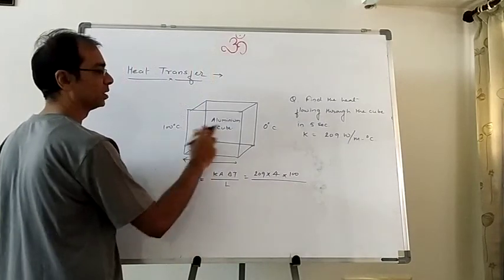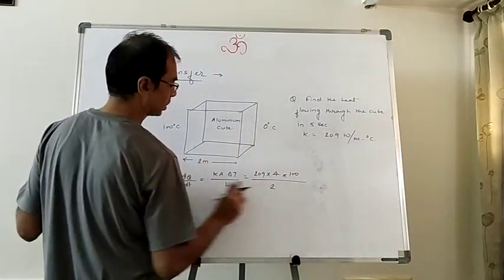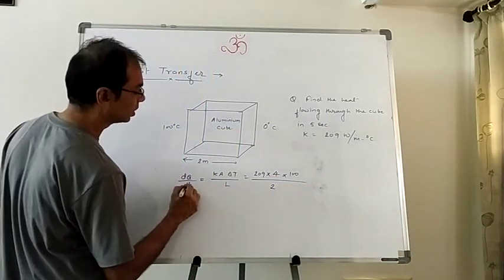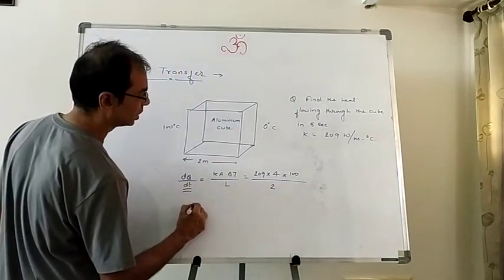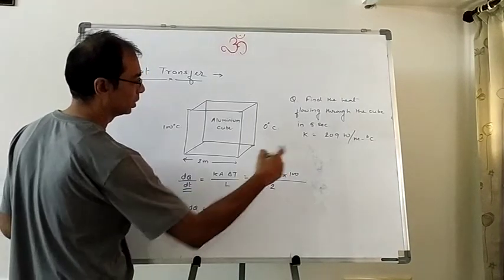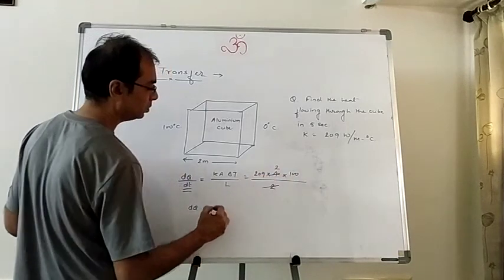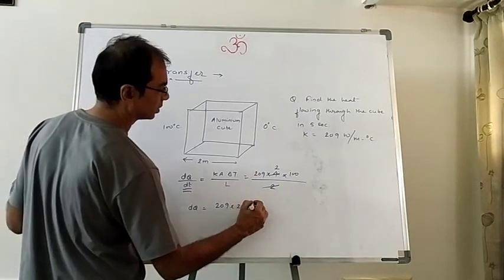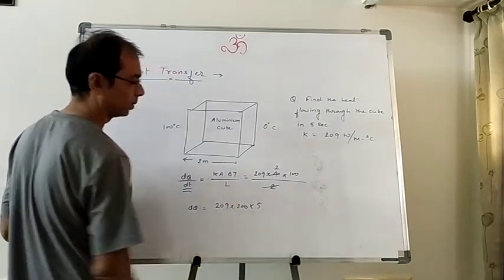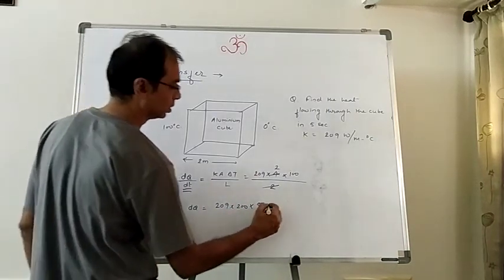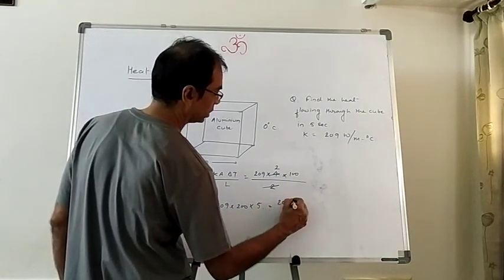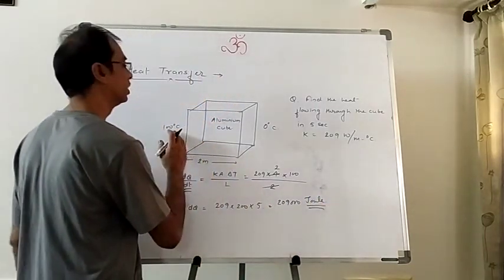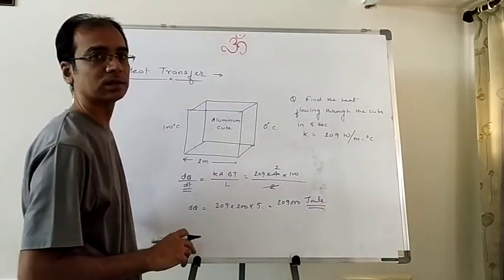The length the heat must pass through is 2 meters. So the power dQ/dt is calculated. Since the question asks for total heat Q and time is 5 seconds, we multiply: 209 × 200 × 5 = 209 × 1000 = 209,000 Joules. That is the heat passed from one end to the other in 5 seconds.